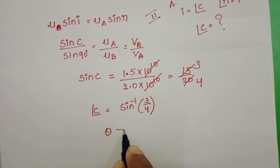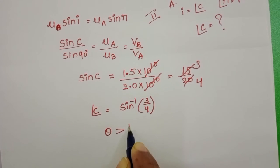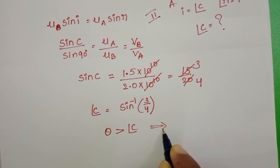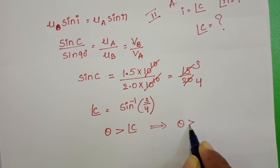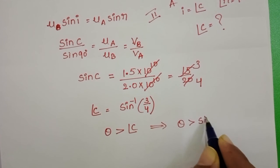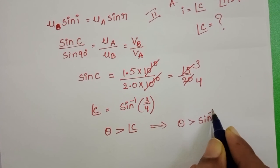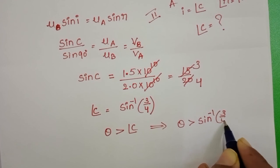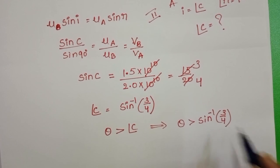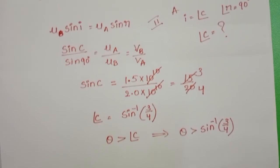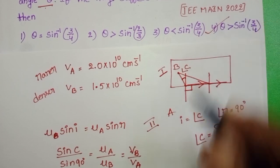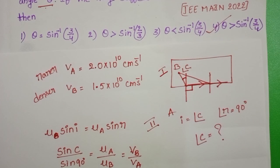When the angle of incidence is greater than the critical angle, then it exhibits the phenomenon of total internal reflection. So theta is greater than sine inverse of 3/4. Checking the given options, the second option is correct.